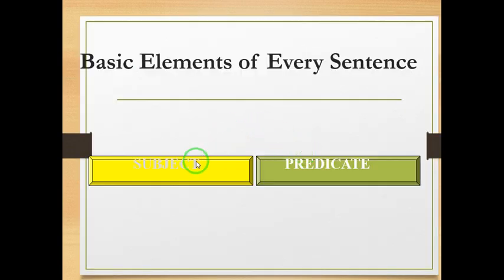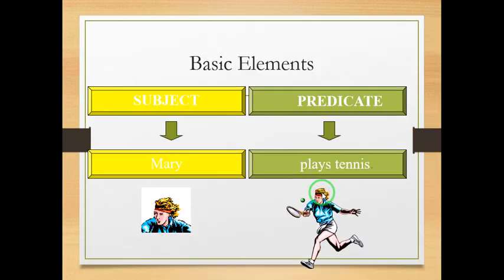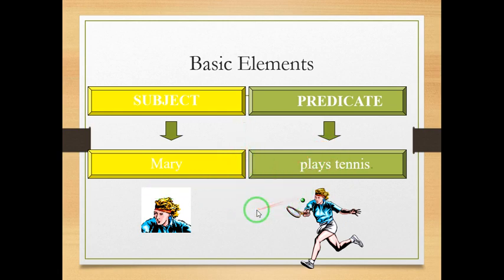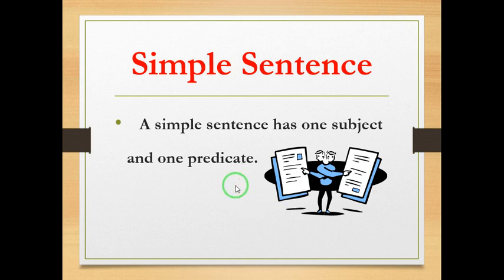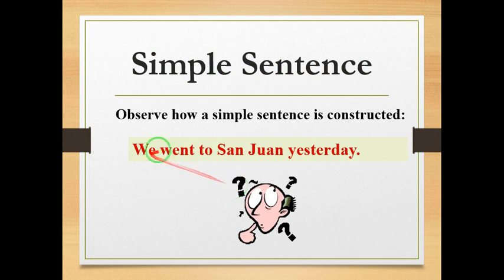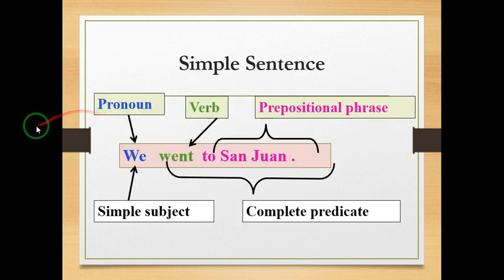First of all, we all know that in each sentence, we have a subject and a predicate. For example, Mary plays tennis. Mary is the subject, plays tennis is the predicate. We shouldn't forget that we always have to look for the verb and draw a slash before the verb to separate the subject from the predicate.